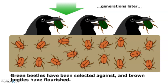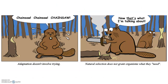Nature is selecting for the good mutations and against the bad mutations. The brown beetles have flourished because they have a gene that helps them survive and have babies. The green beetles most likely died before they could have babies, so they don't pass on that green gene. And there you go — that's natural selection.